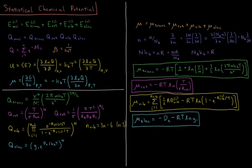This video will discuss the chemical potential in statistical mechanics. Looking at our results from statistical mechanics thus far, we saw that the energy levels accessible to a given molecule equal the energy of translation plus the energy of rotation plus the energy of vibration plus the energy of its electronic state.